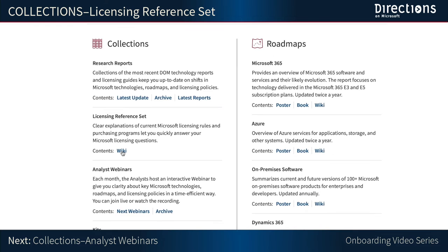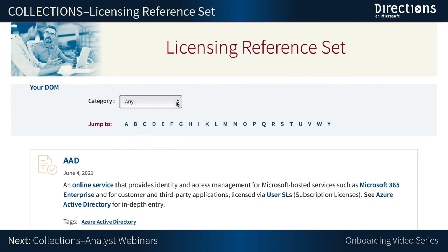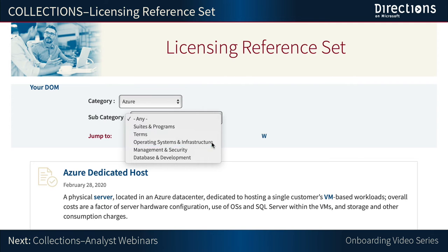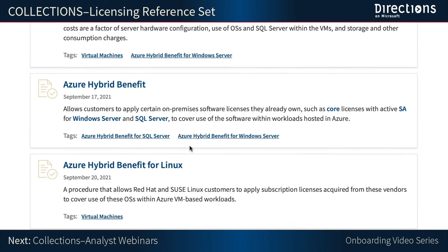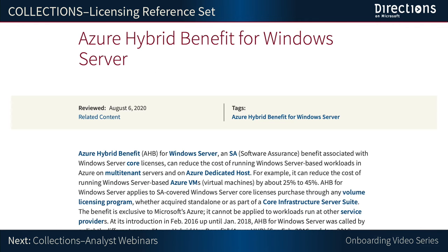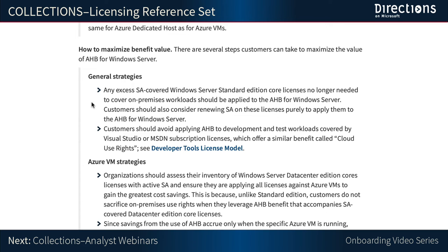Finally, turning to the last example, Azure — let's see what the licensing reference set can tell us about using the Azure Hybrid Benefit for running Windows Server-based workloads in Azure. We're interested in the Azure Hybrid Benefit for Windows Server, so we will click through to that page. Here you have on a single page, and in plain English, answers to fundamental questions such as: What is the Azure Hybrid Benefit and why should we care? What are the eligibility rules? How can we maximize the value of the benefit?